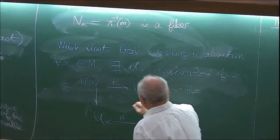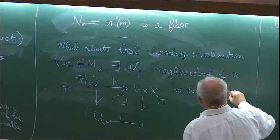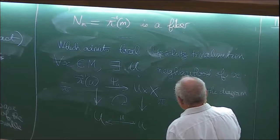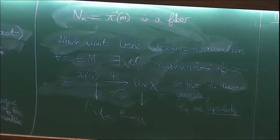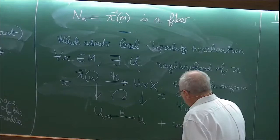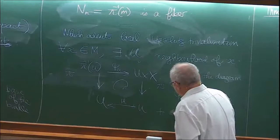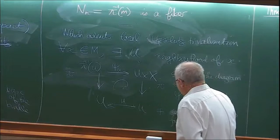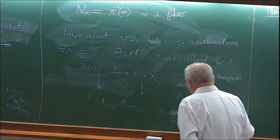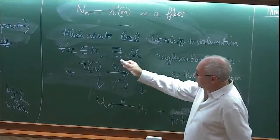The diagram commutes, and psi_U are Lipschitz, plus compatibility conditions for trivialization. It's basically the same structure as a vector bundle, except that here the trivializations are assumed to be Lipschitz.